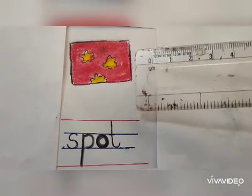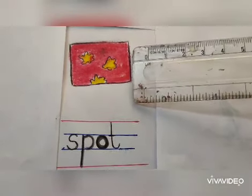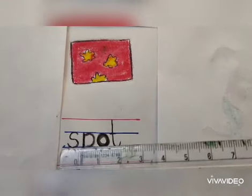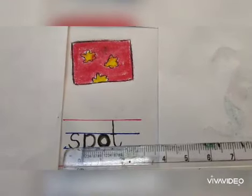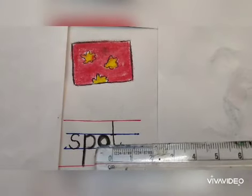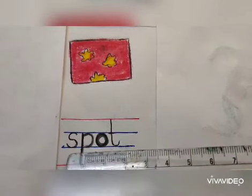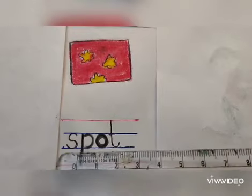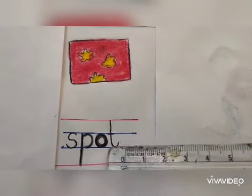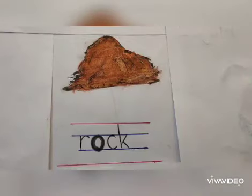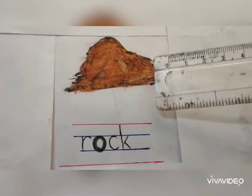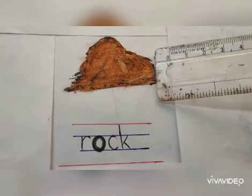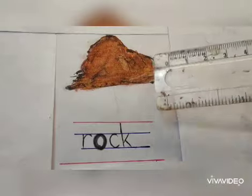See children, this is the picture of a spot. To spell the word spot we will say S P O T spot. S P O T spot. This is the picture of a rock.